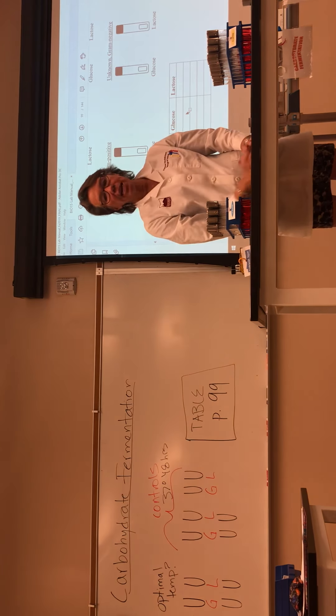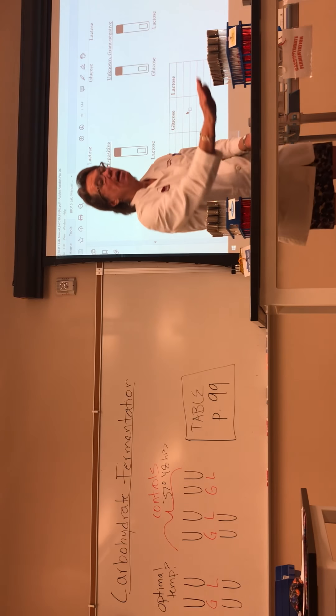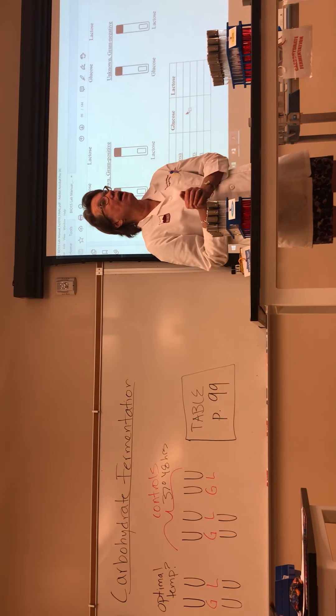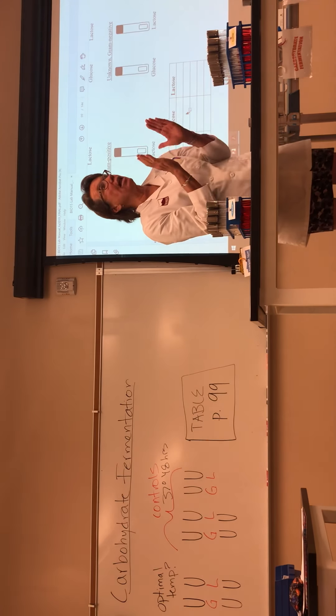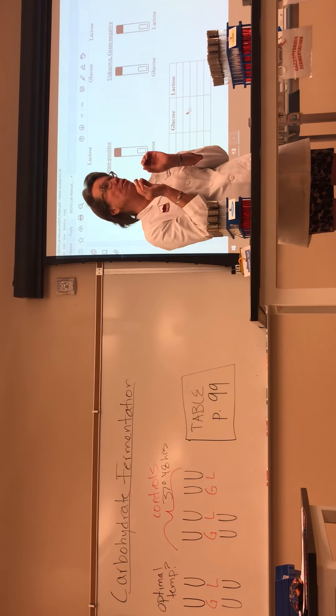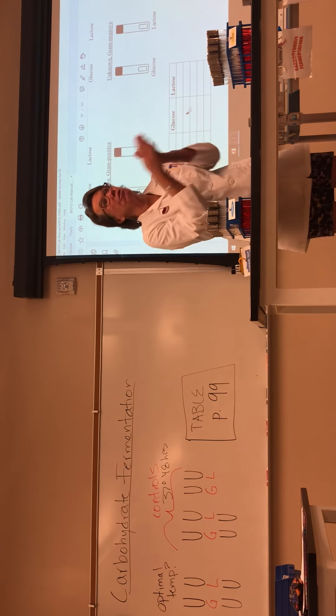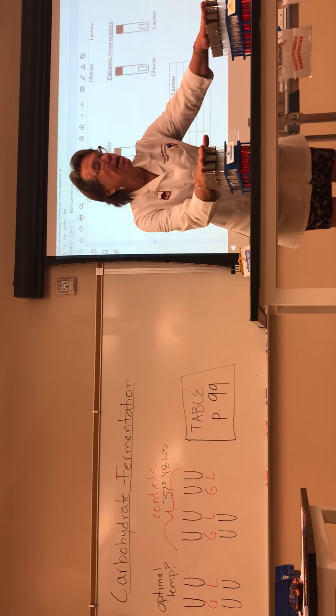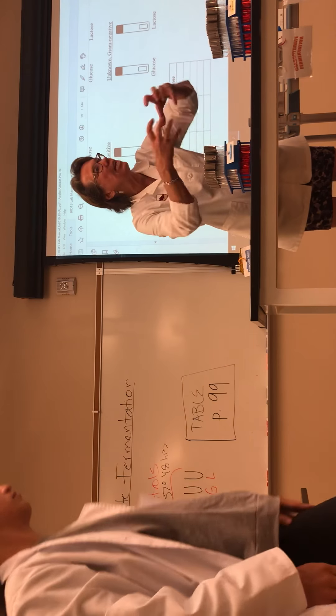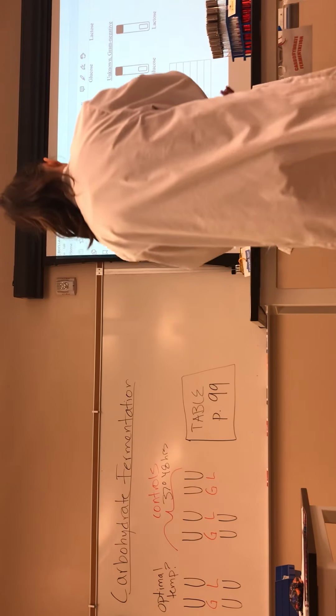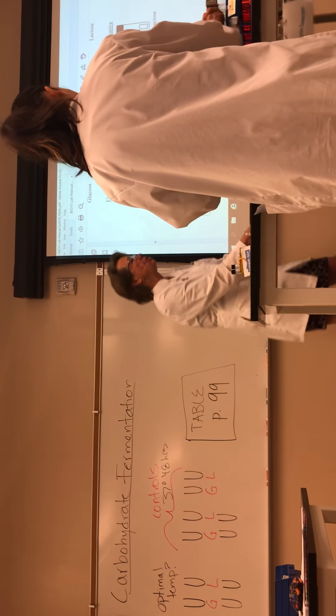You're going to need two glucose and two lactose, because you're going to put your gram positive in a glucose and a lactose, and your gram negative in a glucose and a lactose. I would label these all up so you don't get them mixed up—so you know which one's glucose, which one's lactose, which one's your gram positive, which one's your gram negative. Come on up with your rack because you can't sit these down on the ground. You need two glucose and two lactose. Go ahead and inoculate those.